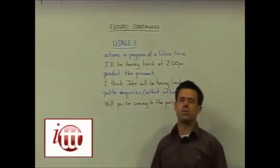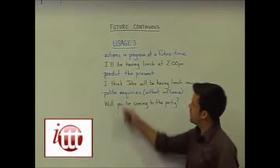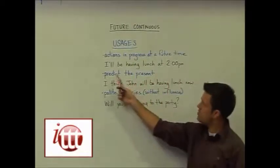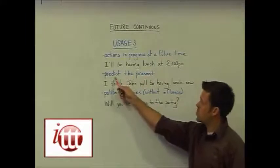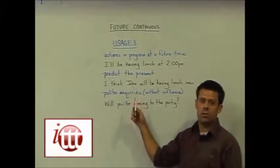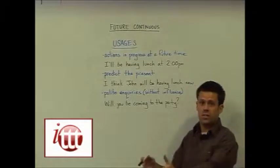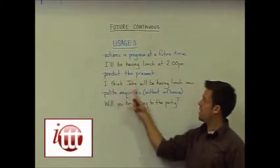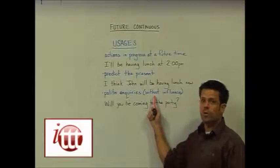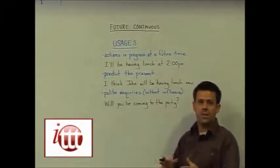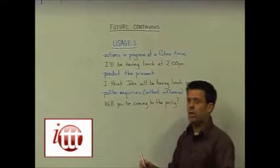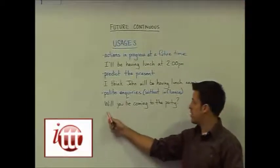Some common usages for the future continuous tense are: to speak about actions in progress at a future time, such as 'I'll be having lunch at 2 p.m.' We can use it to predict the present — if someone asks about John's whereabouts and you're not sure, you might predict: 'I think John will be having lunch now.' We can also use it for polite inquiries, particularly where we don't want to influence the outcome, such as 'will you be coming to the party?'